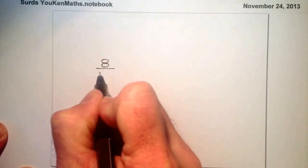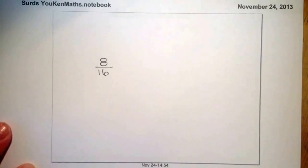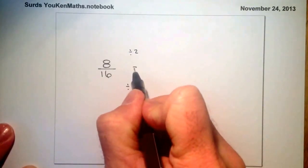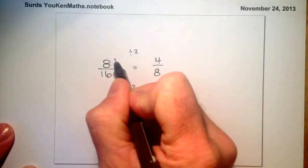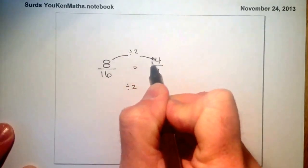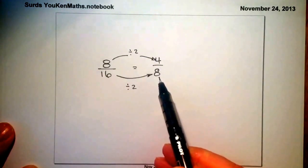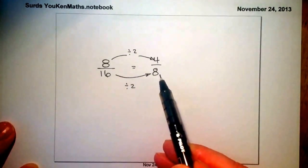With simplifying surds, the way I usually think about it is like simplifying fractions. So if I was to simplify 8 over 16, I could divide the top and the bottom by 2, giving me 4 on top and 8 on the bottom. So going from 8/16 to 4/8 by dividing by 2 — I have simplified it, but I've not simplified it fully. That's something we need to consider when simplifying surds: we need to do it fully.